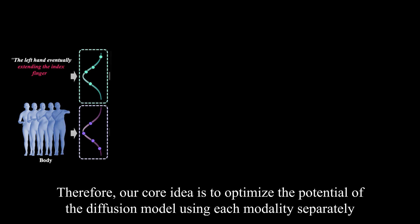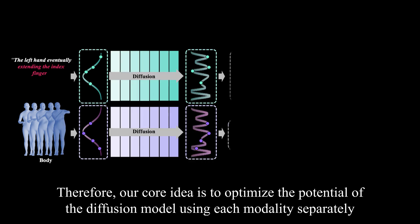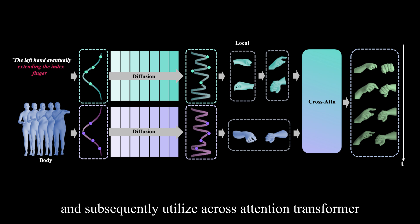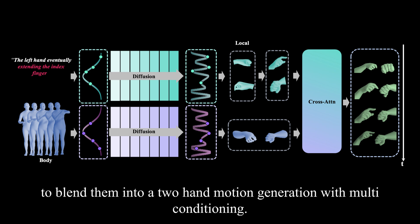Therefore, our core idea is to optimize the potential of the diffusion model using each modality separately and subsequently utilize a cross-attention transformer to blend them into a two-hand motion generation with multi-conditioning.